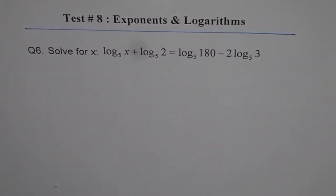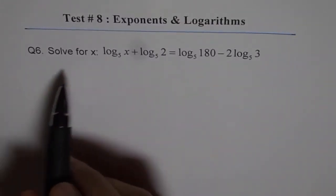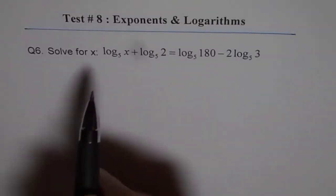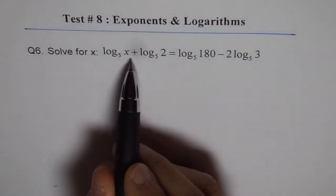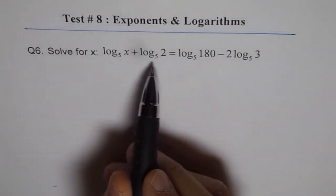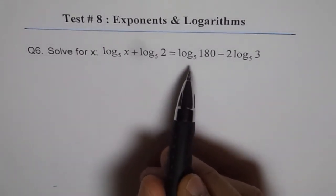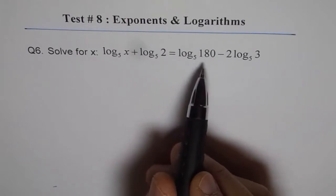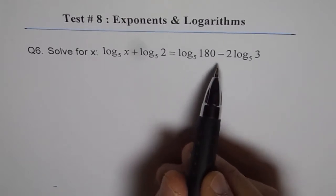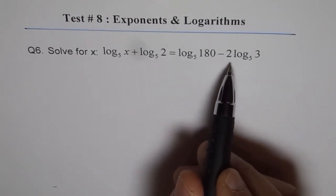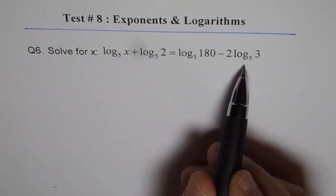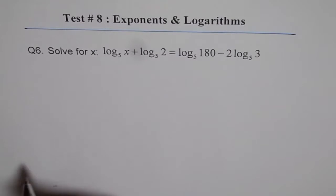Exponents and logarithms test, question 6. Solve for x. Log to the base 5 of x plus log to the base 5 of 2 equals log to the base 5 of 180 minus 2 times log to the base 5 of 3.